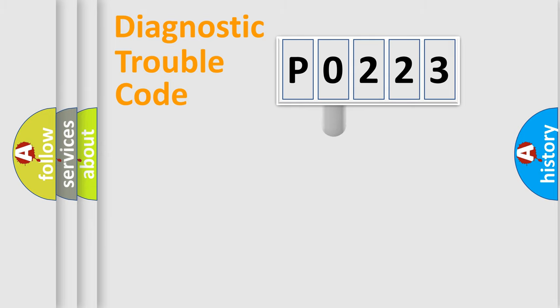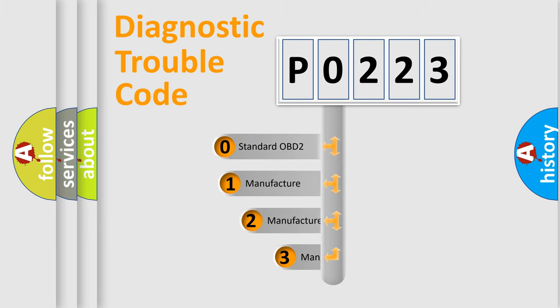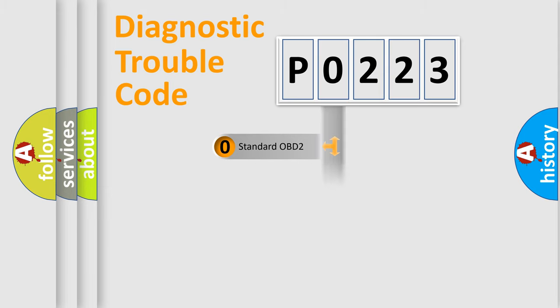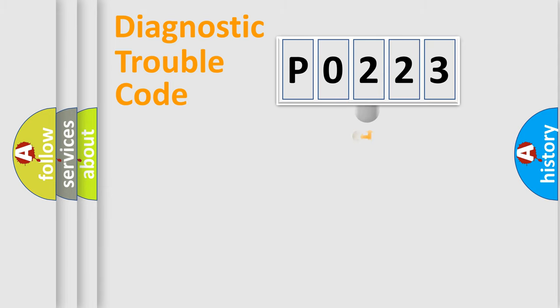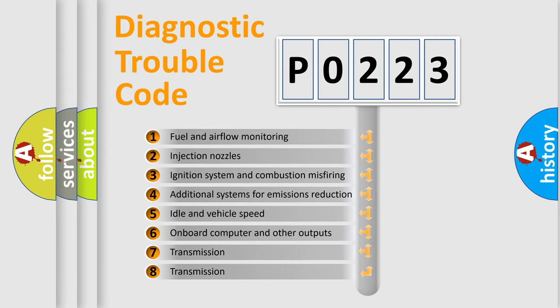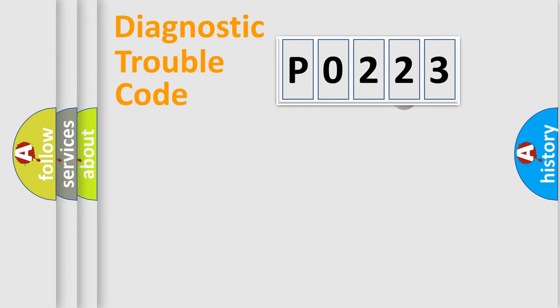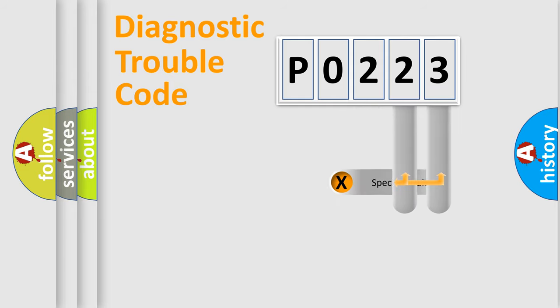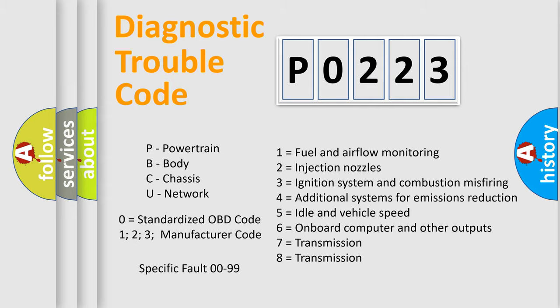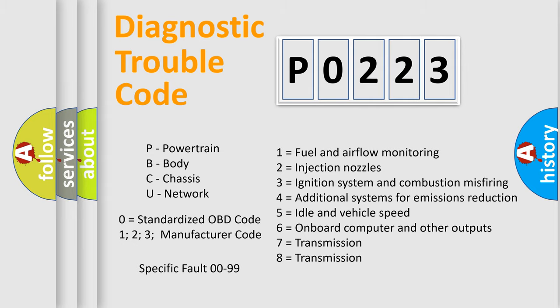This distribution is defined in the first character of the code. If the second character is expressed as zero, it is a standardized error. In the case of numbers 1, 2, or 3, it is a more specific expression of a car-specific error. The third character specifies a subset of errors. This distribution is valid only for the standardized DTC code. Only the last two characters define the specific fault of the group, and this is valid only if the second character is expressed by the number zero.